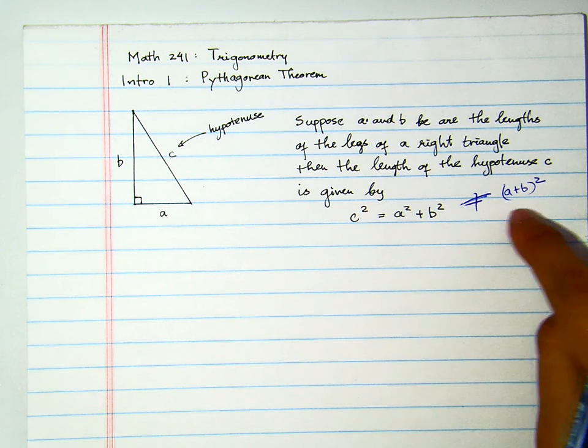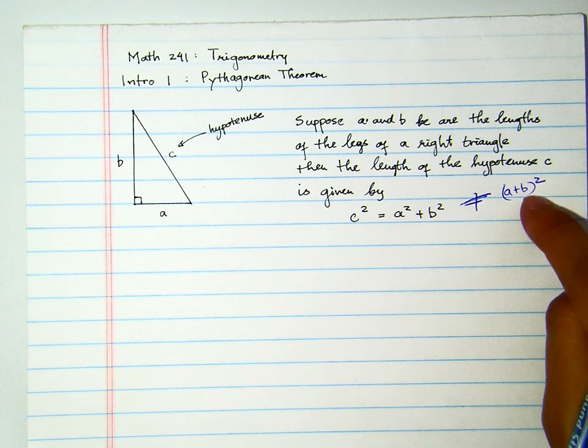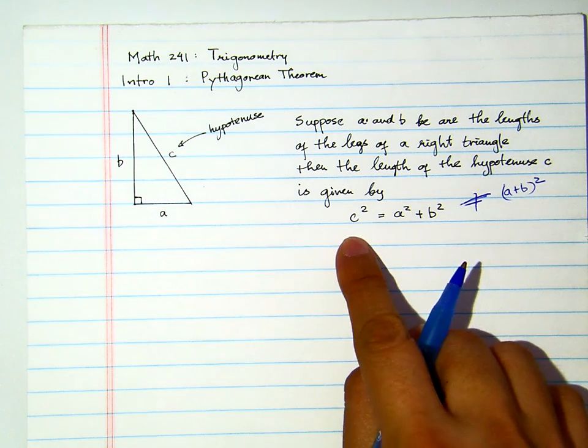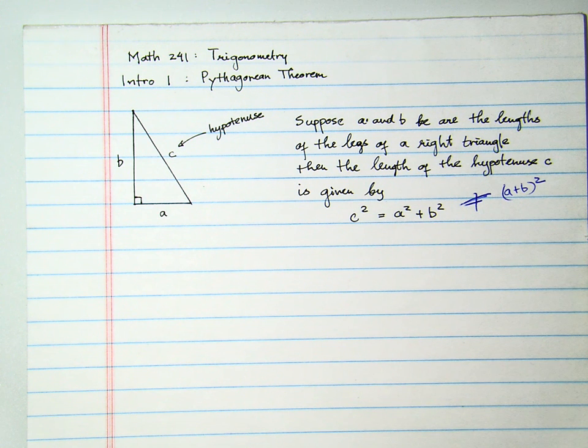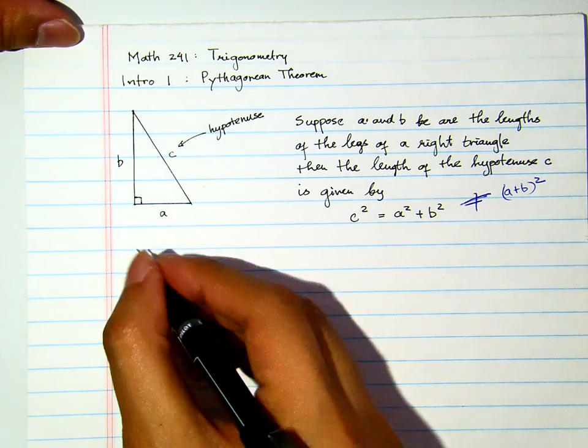If they are the same, then it would have been written this way. But no, it's not the same. C squared equals A squared plus B squared. Now let's do some example on how to apply this formula.